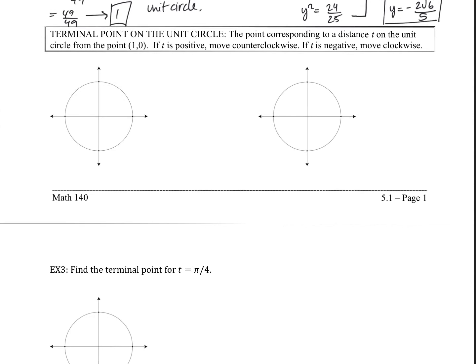Now let's look at something called the terminal point on the unit circle. It's the point corresponding to a distance t on the unit circle from the point (1, 0). This is talking about tracing along the circle.